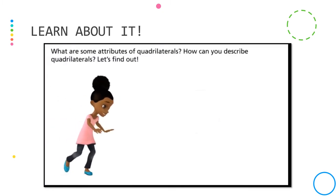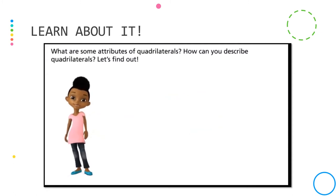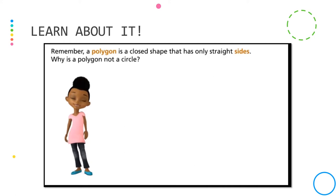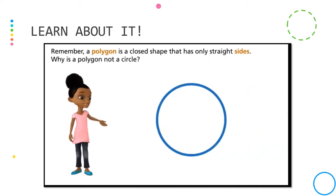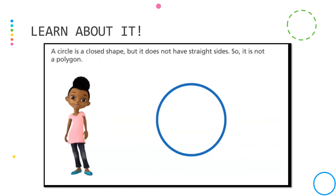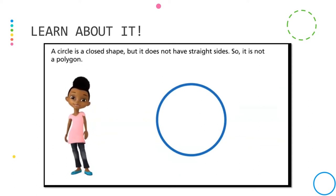What are some attributes of quadrilaterals? How can you describe quadrilaterals? A polygon is a closed shape that has only straight sides. Why is a polygon not a circle? A circle is a closed shape, but it does not have straight sides, so it is not a polygon.